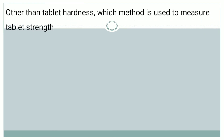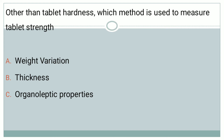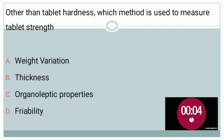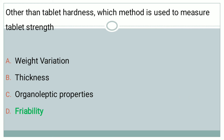Next question: other than tablet hardness, which method is used to measure tablet strength? Options are: A — weight variation, B — thickness, C — organoleptic properties, and D — friability. If you are thinking friability, then it is the right answer.